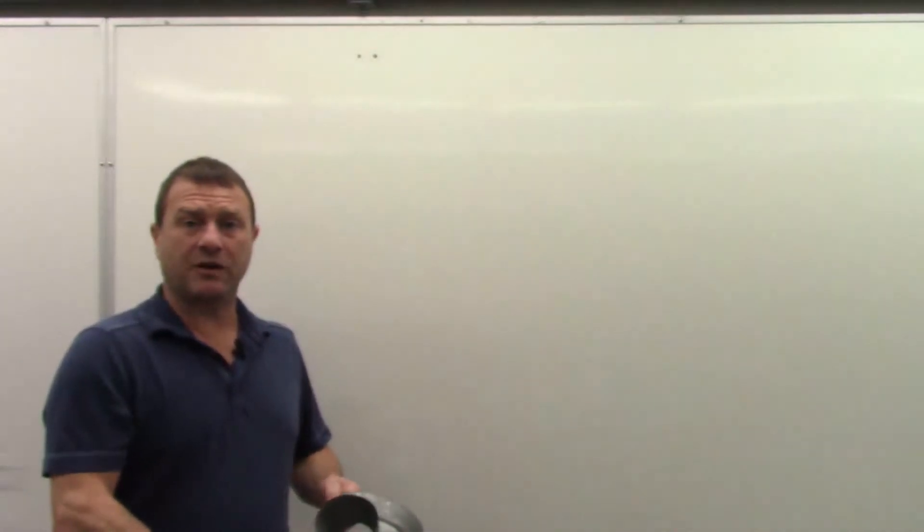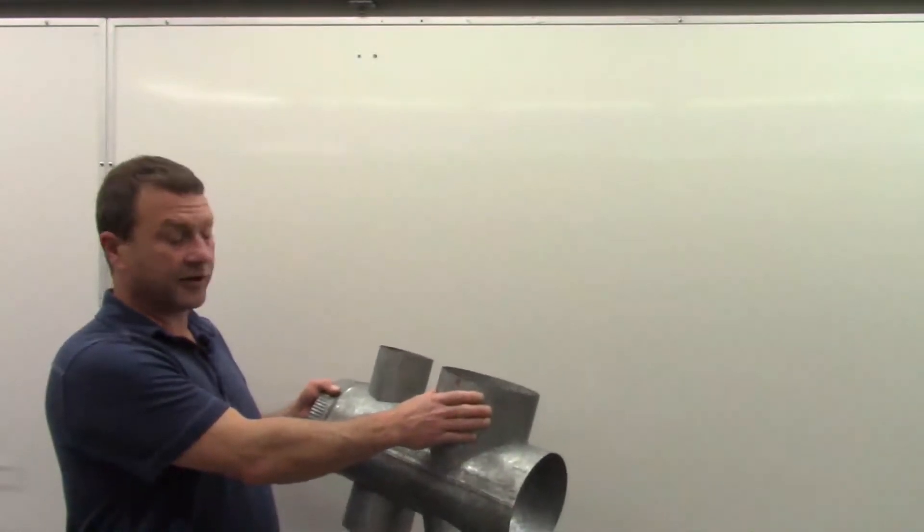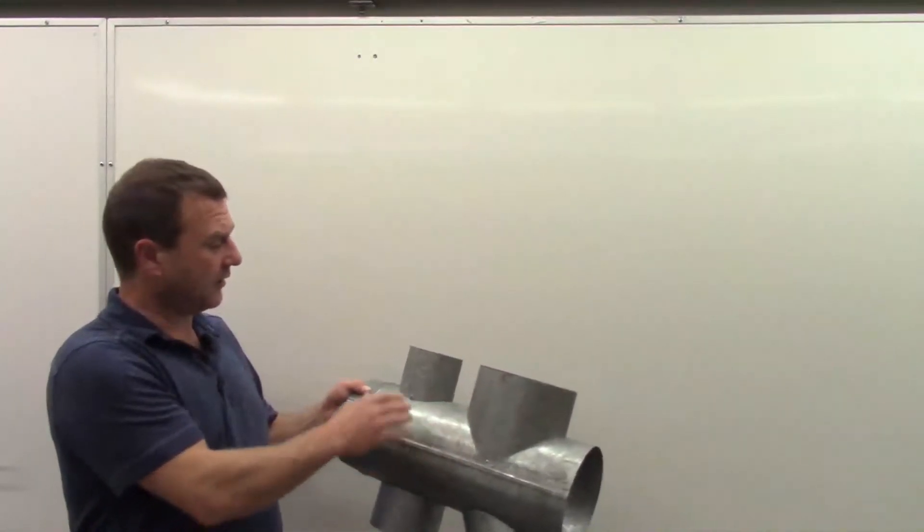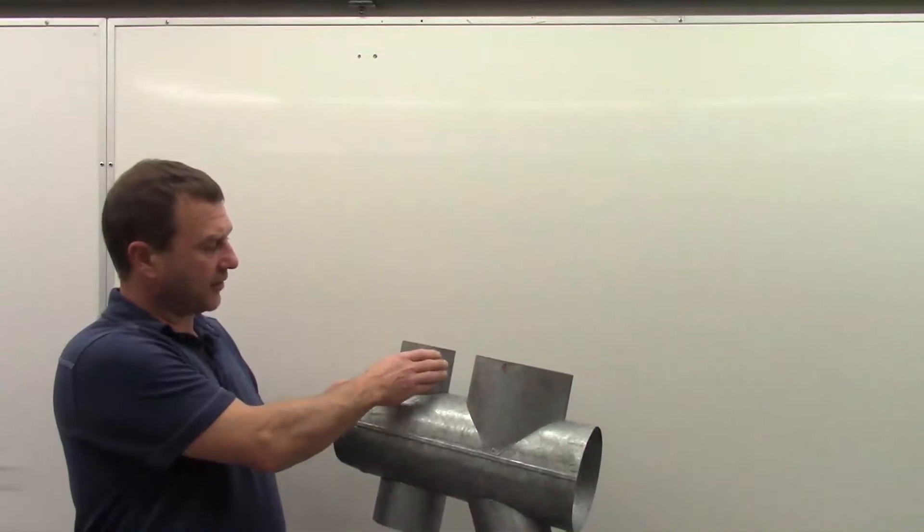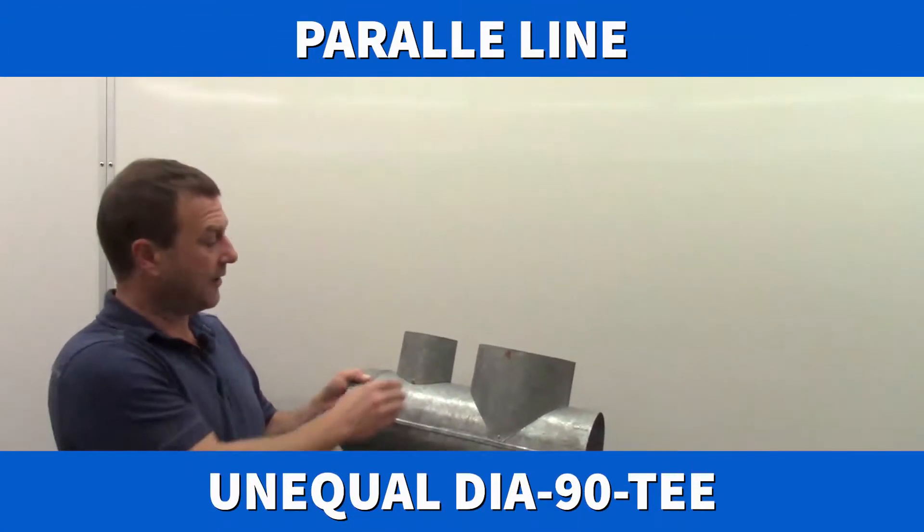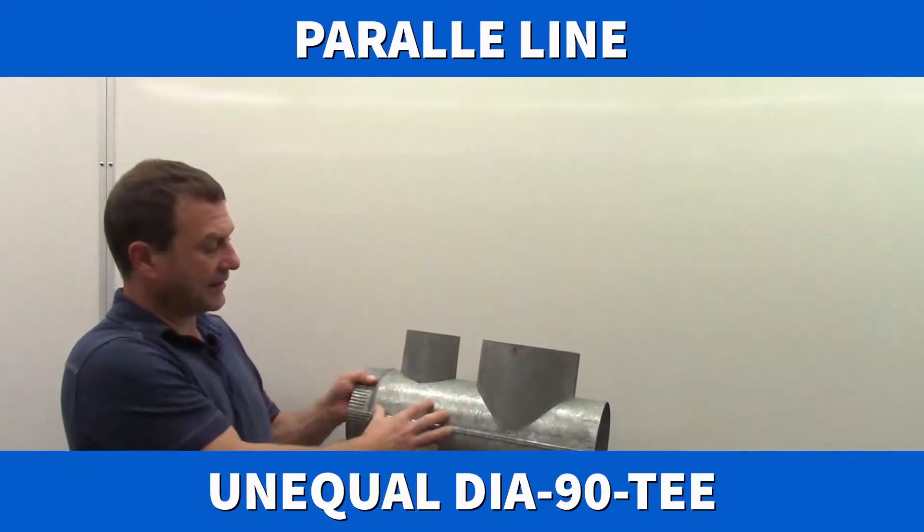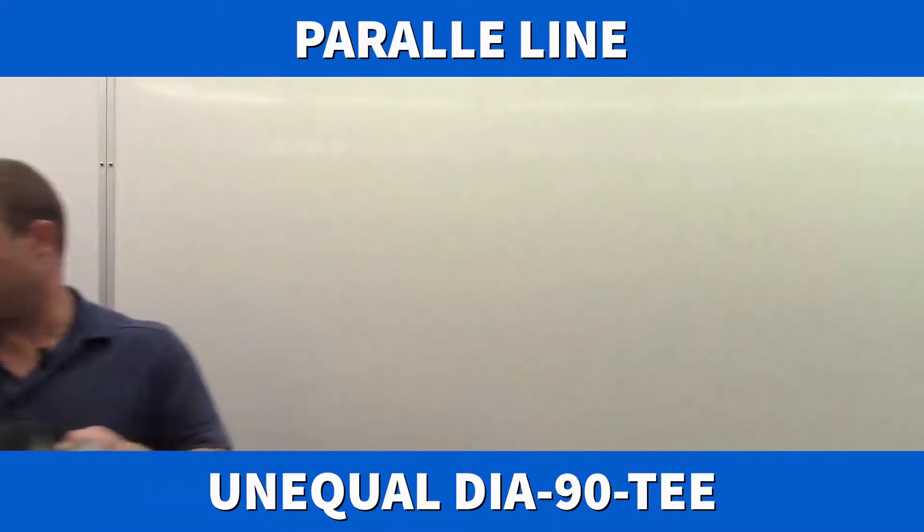Hi. In our last video we looked at parallel line development of T's and we looked at an equal diameter 90 degree T. Today we're going to look at an unequal diameter, still perpendicular off the pipe, so we still have a 90 degree section here, but it's a smaller T than it is.